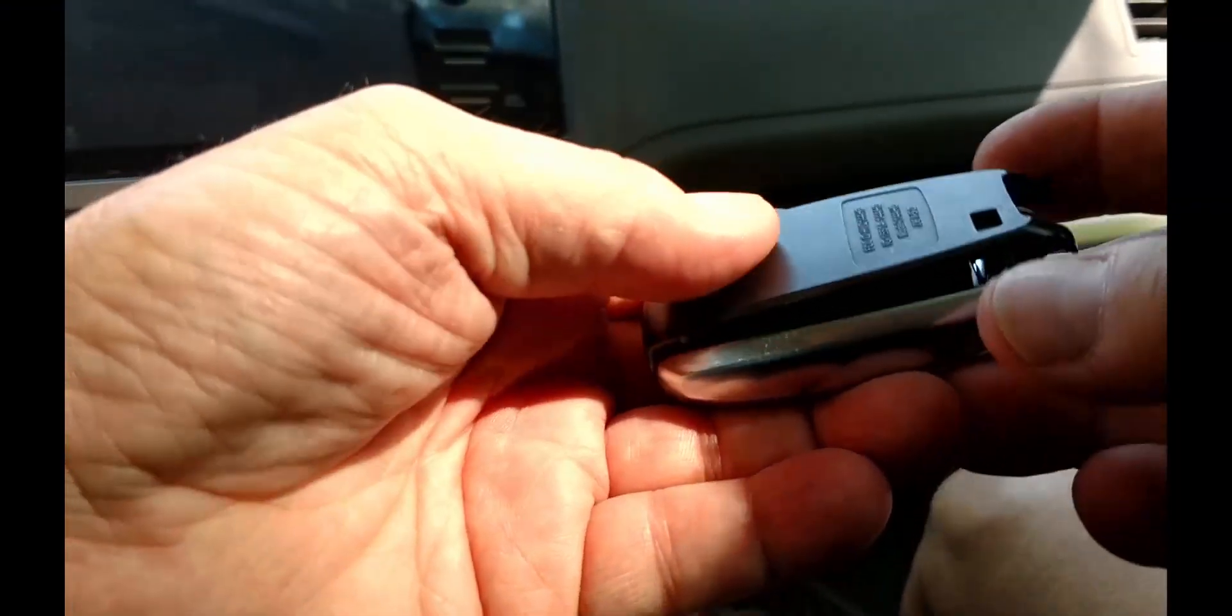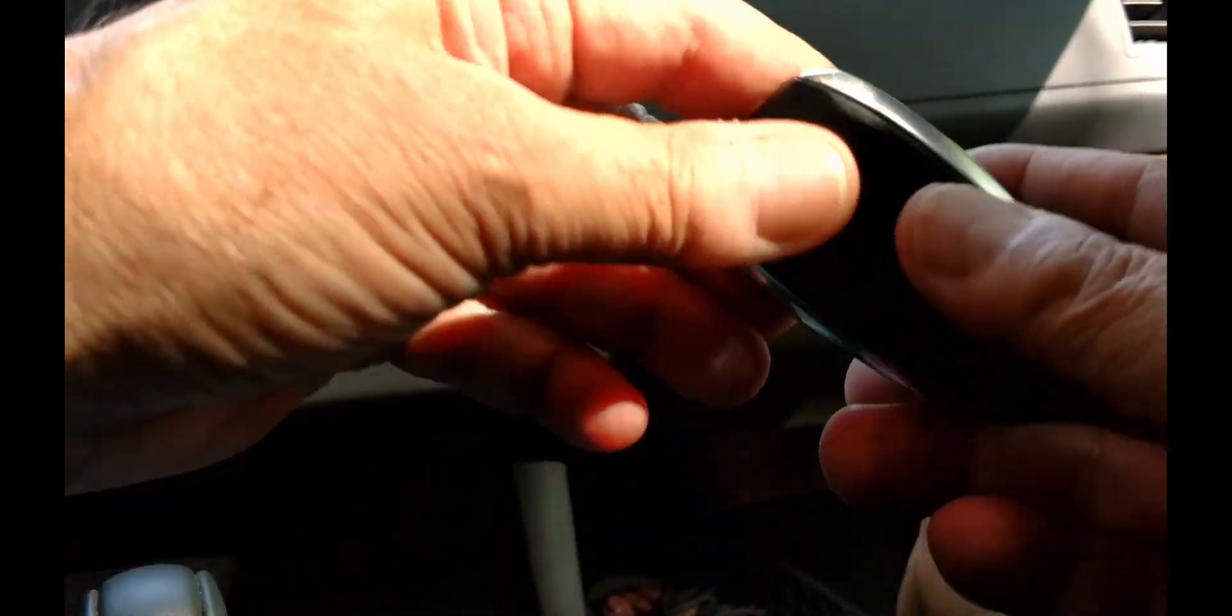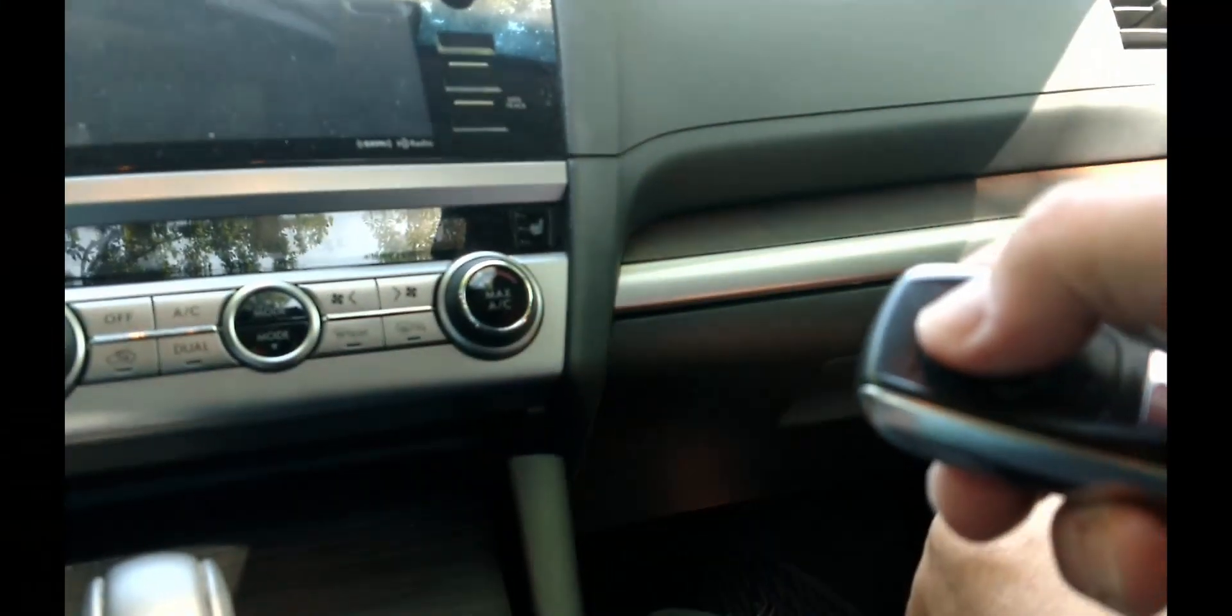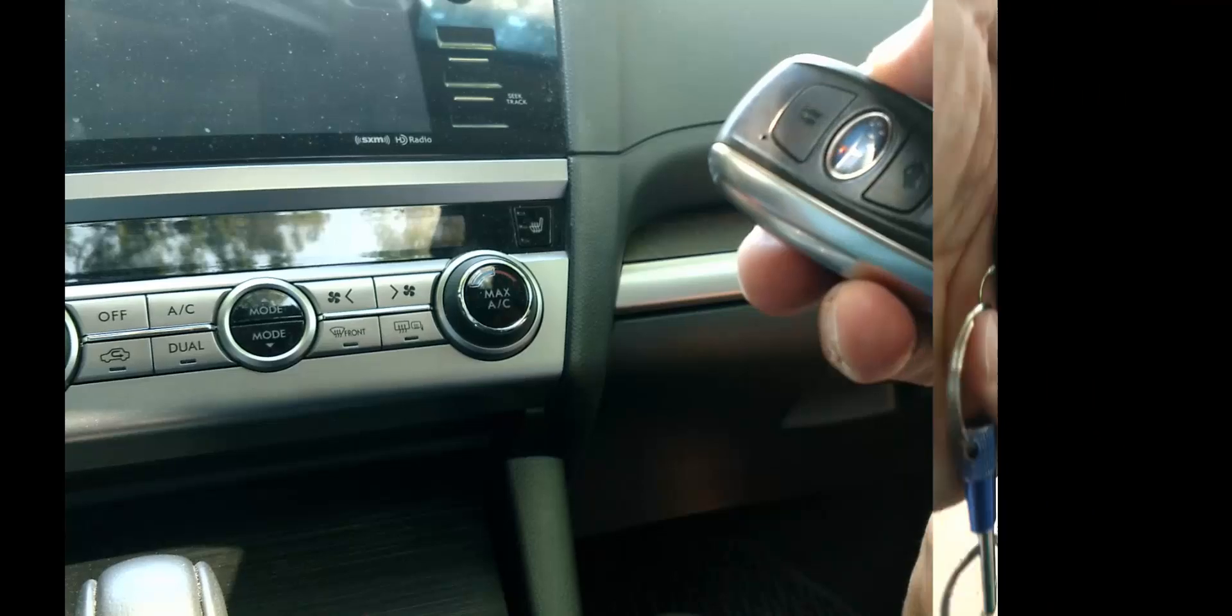The back of the fob snaps back on easily. Then return the mechanical key. Test the locks. Then you will be ready to go.